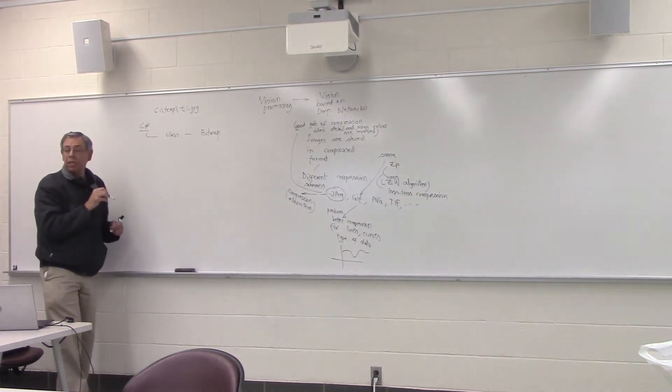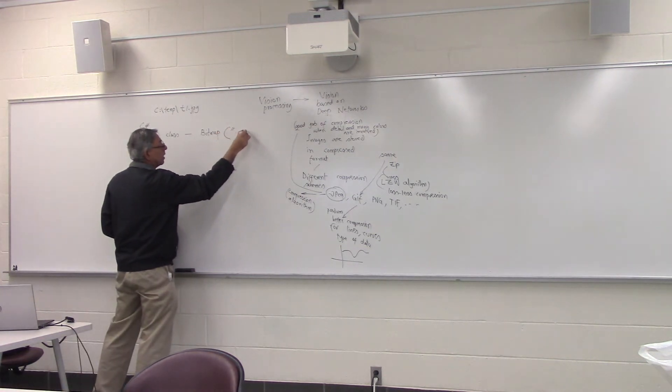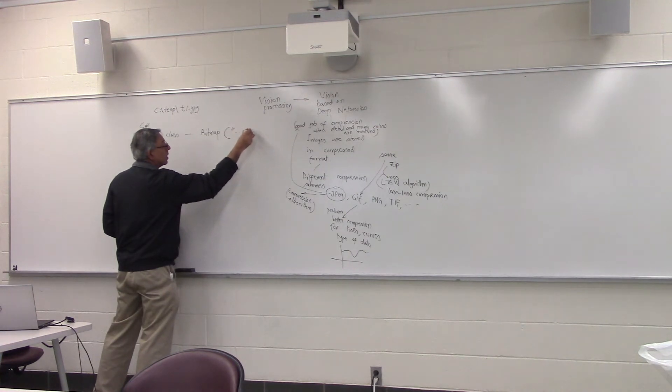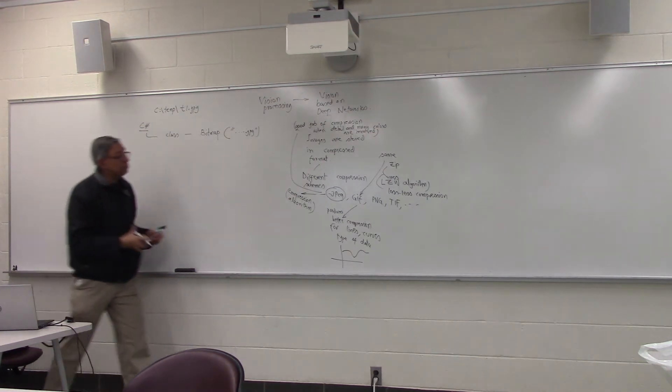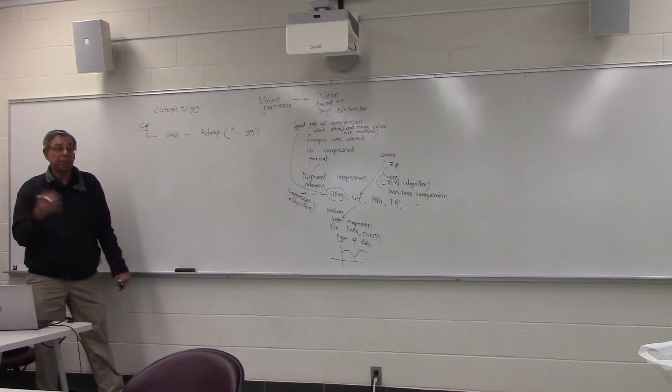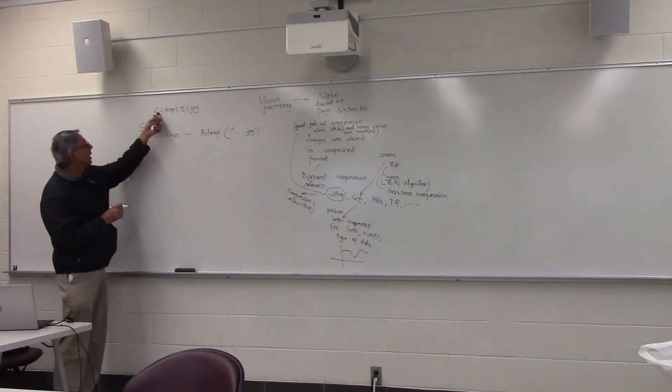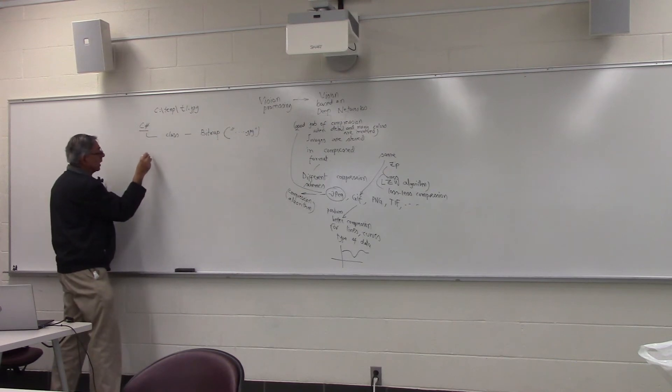In C sharp, there's a class that is already pre-created, which is called Bitmap. In the constructor for this class, all you have to do is pass the JPEG file. Then it will uncompress it and create a Bitmap for us, a two-dimensional Bitmap. To give you a tiny bit explanation of this type of code, let's say this was the image stored T1.jpg. Your C sharp code to display this image will look something like this. You will do Bitmap BMP.